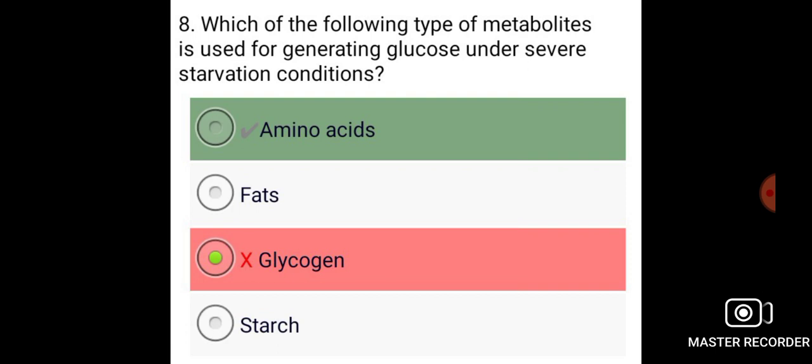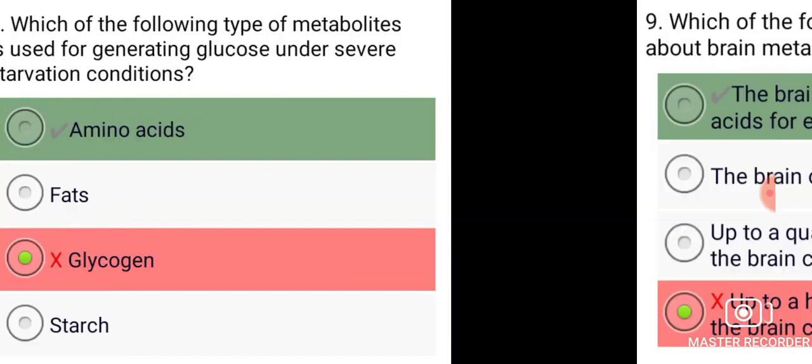Which of the following type of metabolites is used for generating glucose under severe starvation conditions? Amino acids.